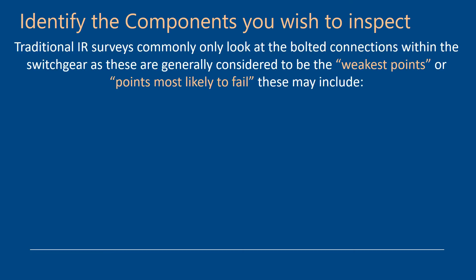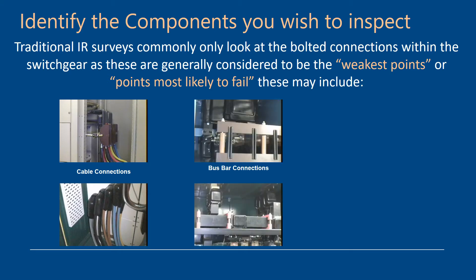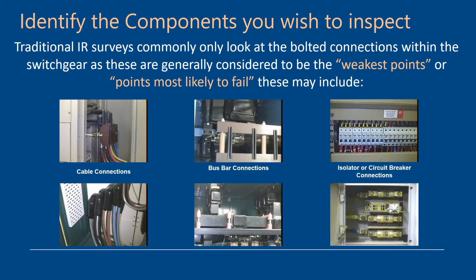First and foremost, you need to identify the components you wish to inspect within your panel. Traditional infrared surveys look at bolted or cable connections — what we class as the weakest connections within the panel. These include cable connections, bus bar connections, isolator or circuit breaker connections, and racking breakers. Faults tend to occur at the ends of joints where components are bolted together and where high-resistance connections can form. This is where we see failures and where we need to concentrate when putting in inspection systems.